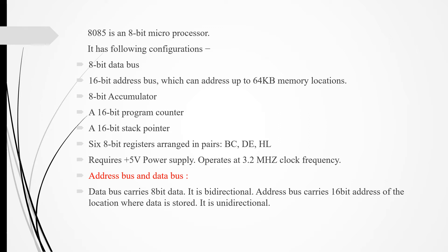Now we will see the address bus and data bus. The data bus carries 8-bit data and is a bi-directional bus. The address bus carries the 16-bit address of the location where data is stored, and it is a unidirectional bus.